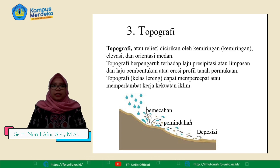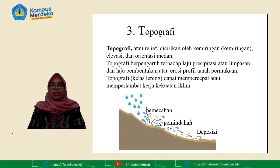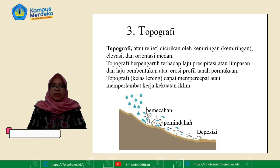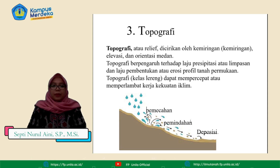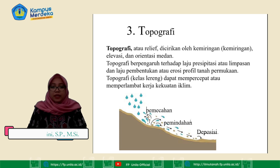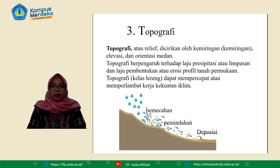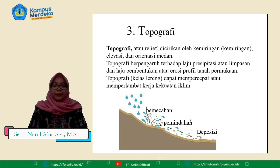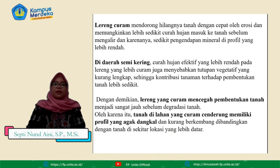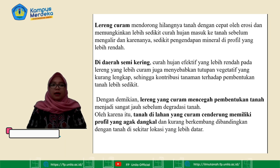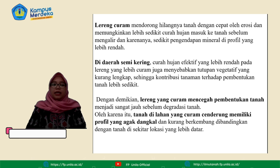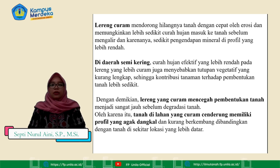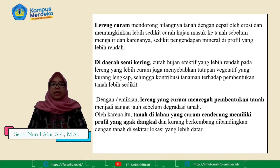Faktor ketiga yaitu topografi. Topografi atau relief ini dicirikan oleh kemiringan, elevasi, dan orientasi medan. Topografi berpengaruh terhadap laju presipitasi atau limpasan, dan laju pembentukan atau erosi tanah permukaan. Topografi atau kelas lereng dapat mempercepat atau memperlambat kerja kekuatan iklim. Lereng curam akan mendorong hilangnya tanah dengan cepat oleh erosi, dan memungkinkan lebih sedikit curah hujan masuk ke tanah sebelum mengalir, sehingga sedikit pengendapan mineral di profil yang lebih rendah.